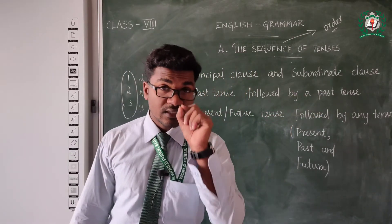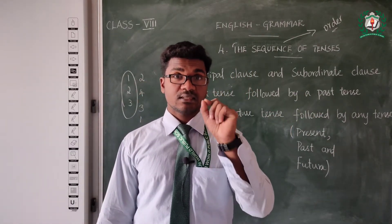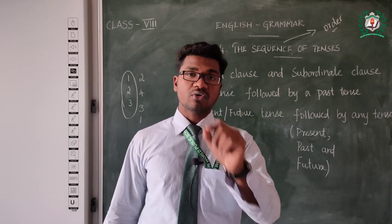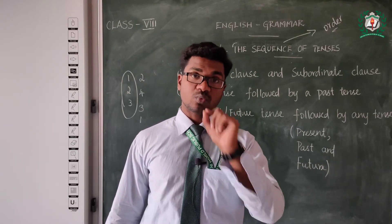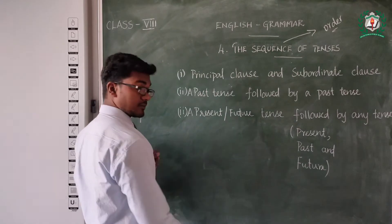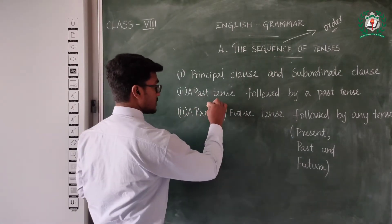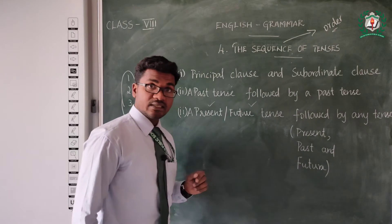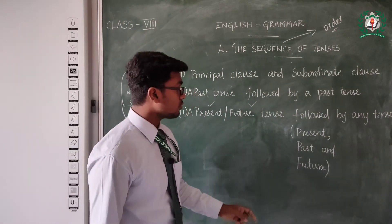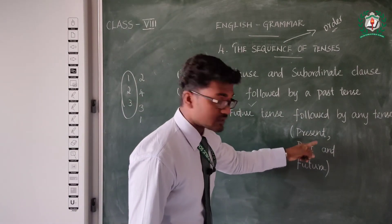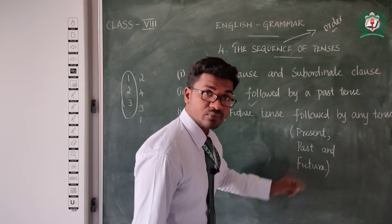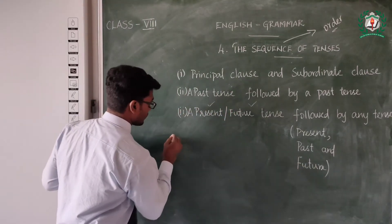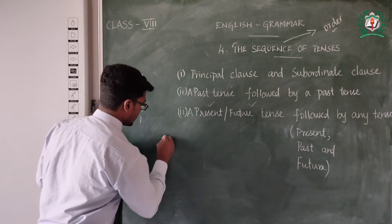The rule is: a past tense is followed by a past tense. When a sentence starts with the past tense, it will be followed by past tense only. But when a sentence starts with the present or future tense, it can be followed by all three — present, past, and future. Let's look at examples.